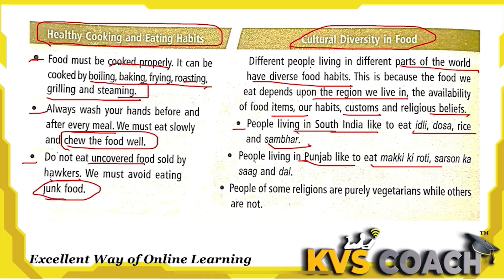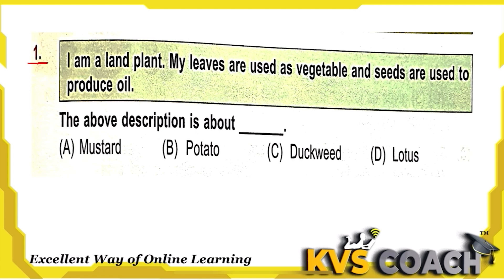For example, people living in South India like to eat idli, dosa, rice, and sambar. People living in Punjab like to eat makki ki roti and sarson ka saag. Some people of certain regions are purely vegetarian while others are not, so different people of different religions have different food habits.